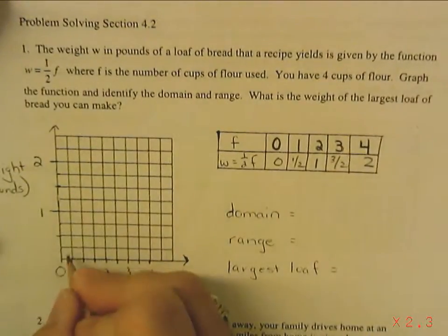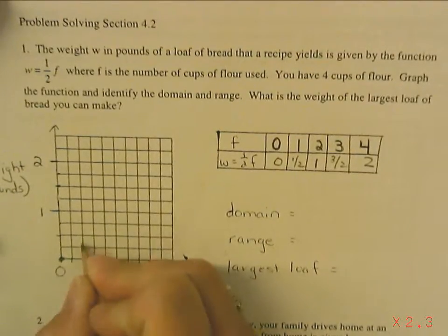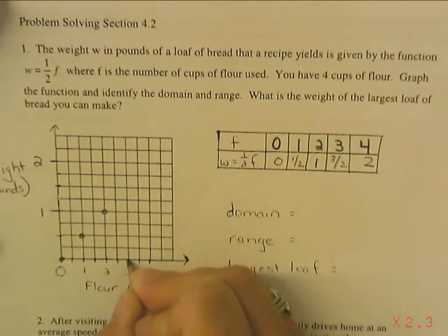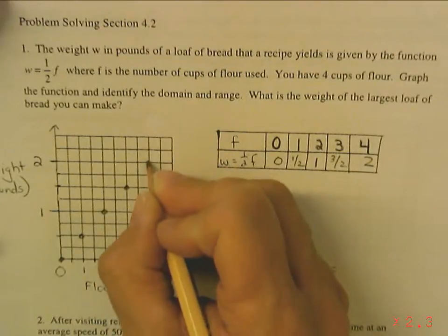So I'm going to graph zero, zero, one, one half, two, one, three, three halves, four, two.